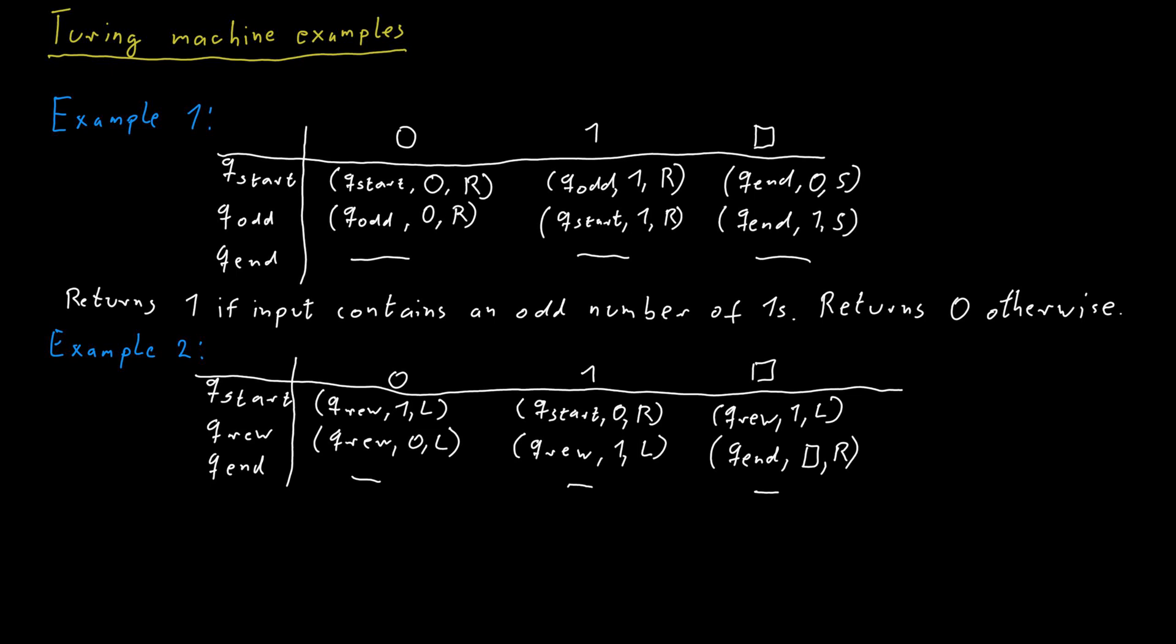This Turing machine increments a natural number which is encoded in binary with the least significant bit on the left. So with this encoding, it takes a number x as an input and it outputs x plus 1.